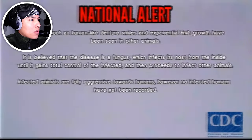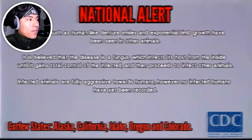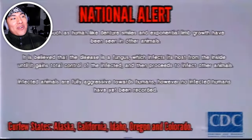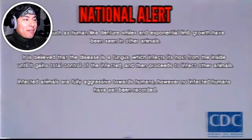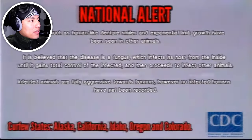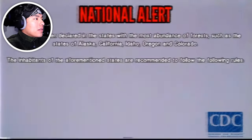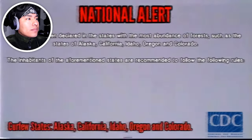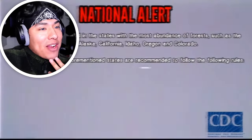Mutations such as human-like dentures, smiles, and exponential limb growth have been seen in other animals. It is believed that the disease is a fungus which infects its host from the inside until it gains total control of the infected. So it's kind of like a parasite. The animals are fully aggressive towards humans, however no infected humans have yet been recorded — so we're good. The virus is declared in the states with the most abundance of forests: Alaska, California, Idaho, Oregon, and Colorado. No Ohio? I'm surprised Ohio wasn't on the list, dude.